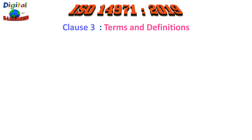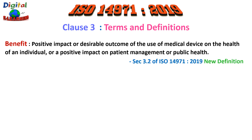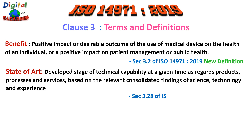Three new terms have been added under clause 3, terms and definitions, in the revised 2019 edition. The first is 'benefit,' defined as the positive impact or desired outcome of using a medical device on the health of an individual, or the positive impact on patient management or public health. Examples include faster recovery, more accurate diagnosis, better public health care, or more complete recovery. The second is 'state of the art,' meaning the developed stage of technical capability at a given time, as regards products, processes, and services, based on relevant consolidated findings of science, technology, and experience.